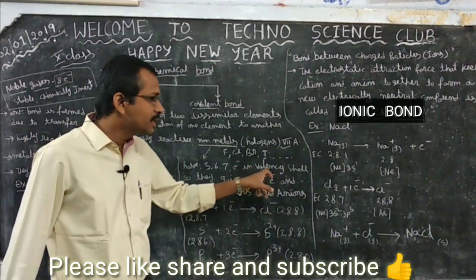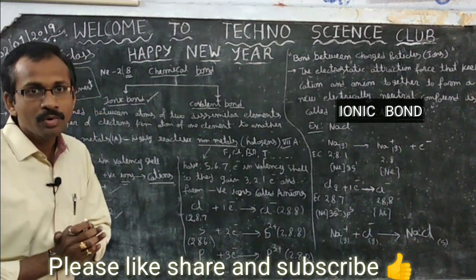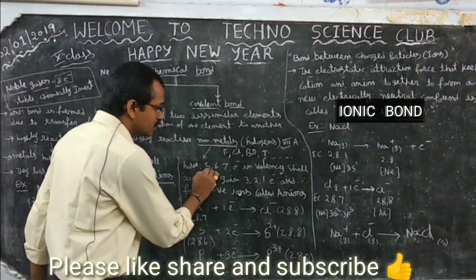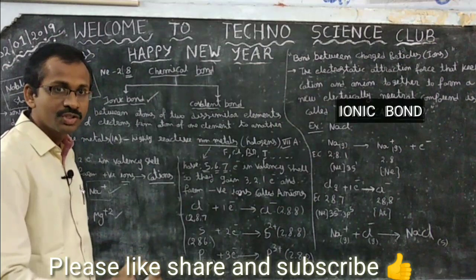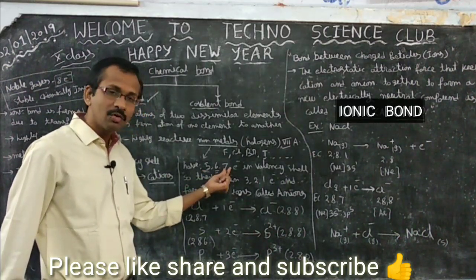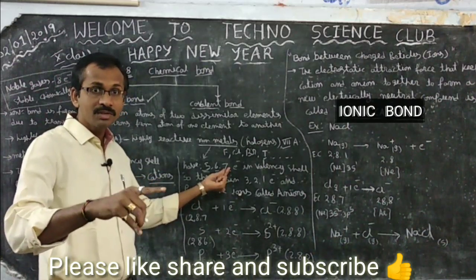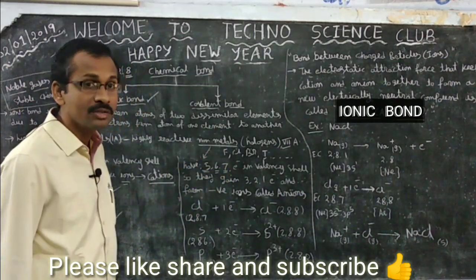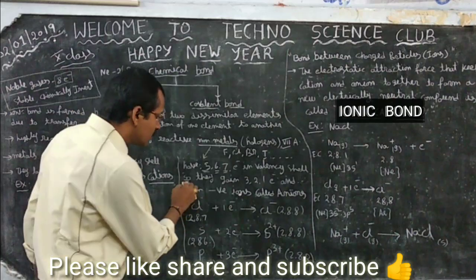Halogens have five, six, or seven electrons in their valency shell. Any element needs eight electrons in its outermost shell for stability. A halogen having seven electrons needs to gain just one more electron to reach eight and become stable. So halogens gain electrons and get a stable electronic configuration.